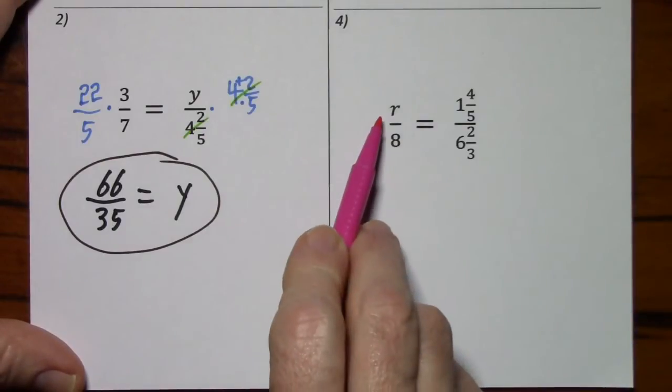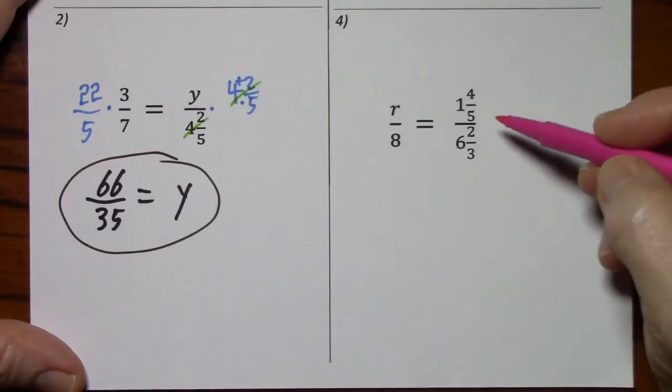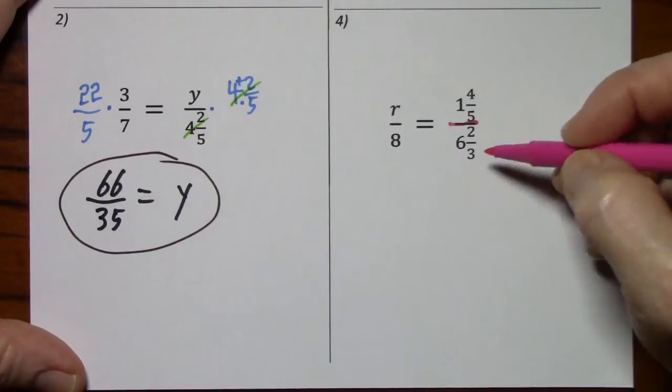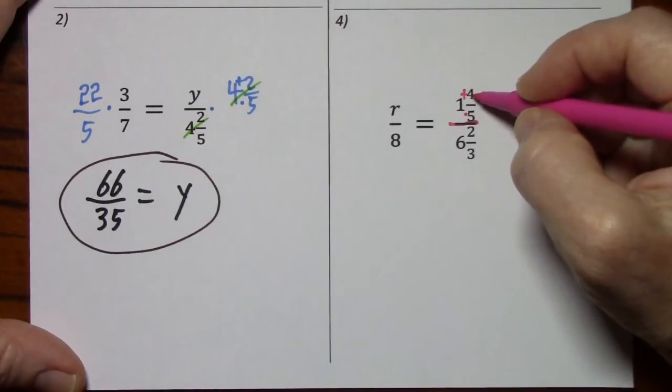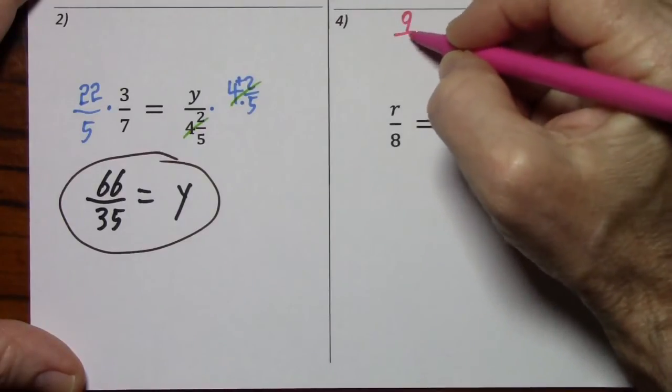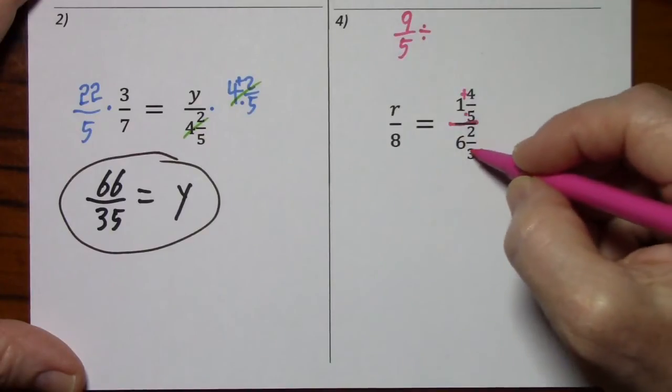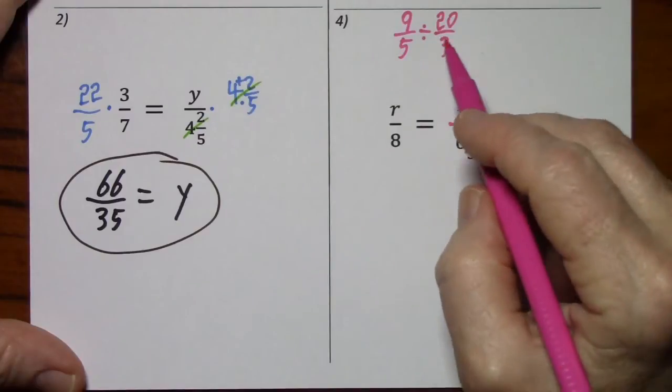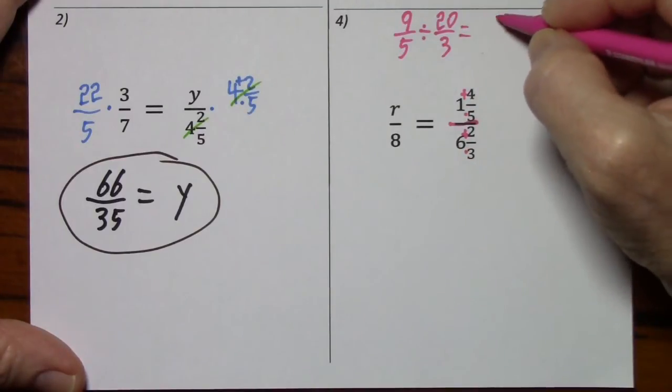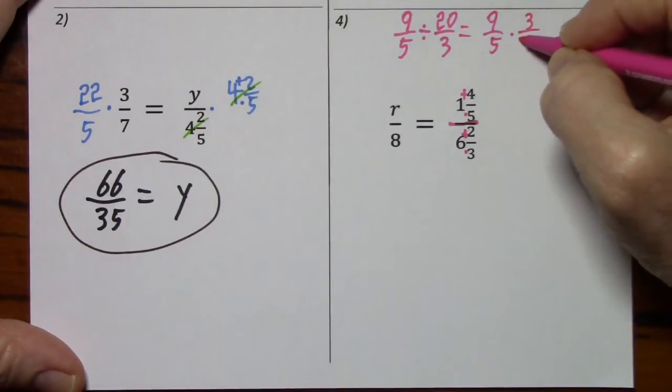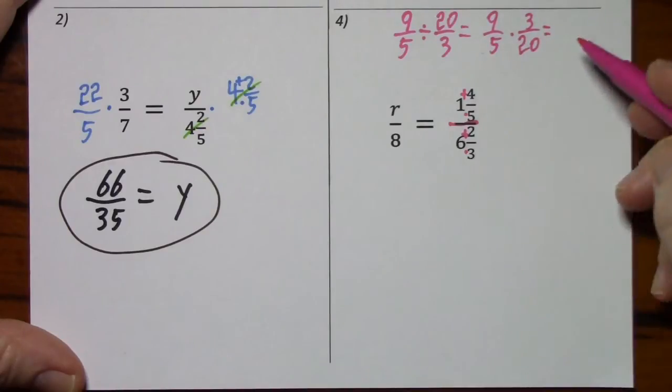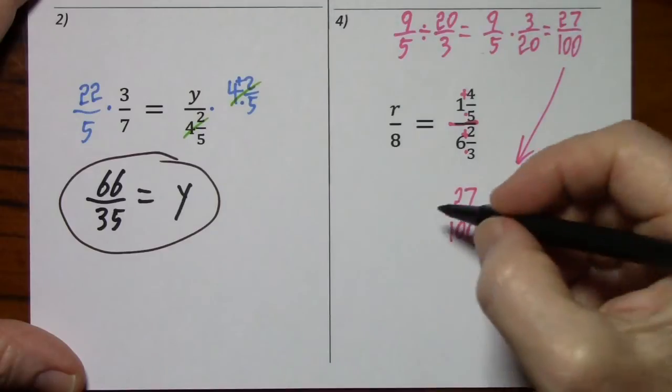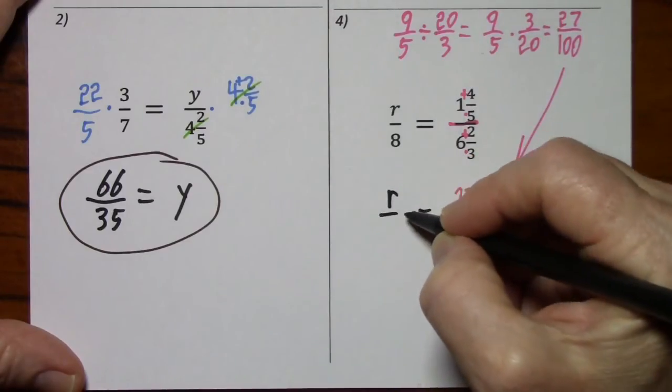Looking at this problem, the variables in the numerator, all I have to do is multiply by 8. But this side is such a mess, I'm just going to clean this up first. So this is 1 and 4 fifths divided by 6 and 2 thirds. So let's write that as 9 fifths. And I'll be real explicit this time. I'll say it's divided by 20 over 3. But when you divide by a fraction, we have to flip it or take the reciprocal and multiply. And nothing's going to cancel. So we get 27 over 100. I'm just going to put that down here.